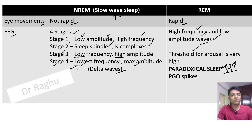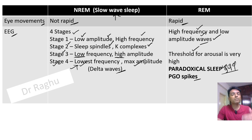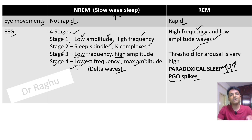In REM sleep we also see what are called PGO spikes. These are large phasic potentials in groups of 3 to 5. They originate in the pons, move to the lateral geniculate body, and then to the occipital cortex. PGO stands for Pontine, Geniculate body, and Occipital cortex. These PGO spikes are not seen in NREM sleep.